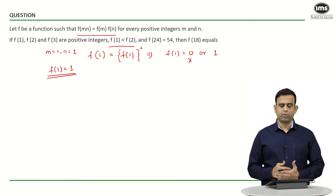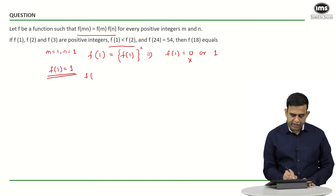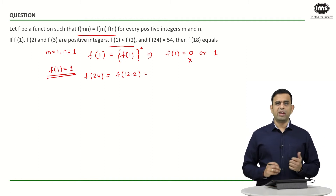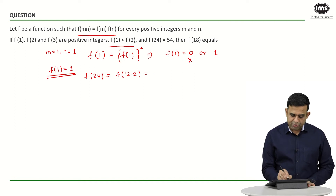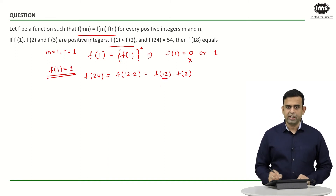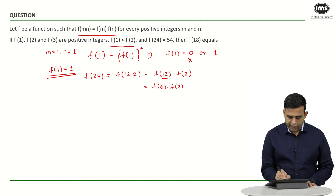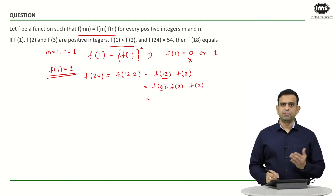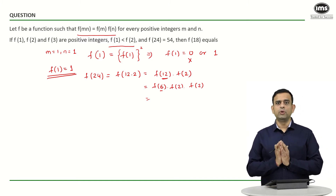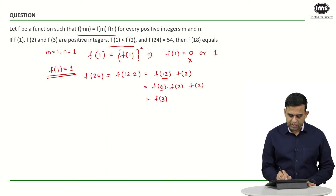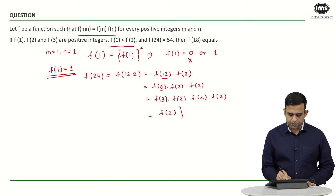Next, we are given f(24) = 54. Using the same multiplicative property, I can write f(24) = f(12×2) = f(12)×f(2). Then f(12) = f(6×2) = f(6)×f(2), and f(6) = f(2×3) = f(2)×f(3). Substituting back, f(24) = f(3)×f(2)×f(2)×f(2), which becomes f(2)³×f(3).